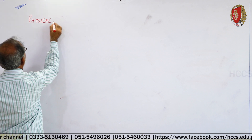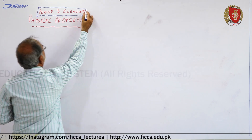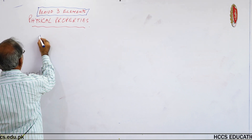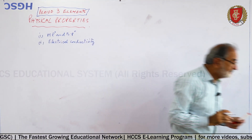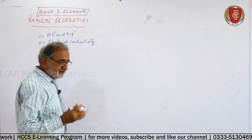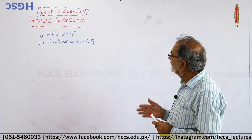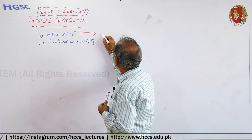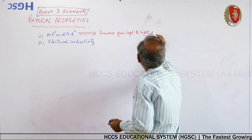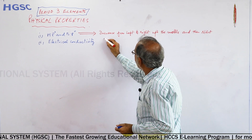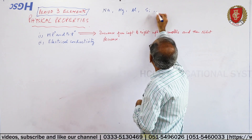Now we come to physical properties of period three elements. There are various physical properties: number one, melting point and boiling points; number two, electrical conductivity. The melting and boiling points increase from left to right up to the middle and then start decreasing.